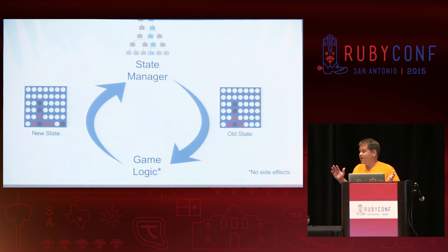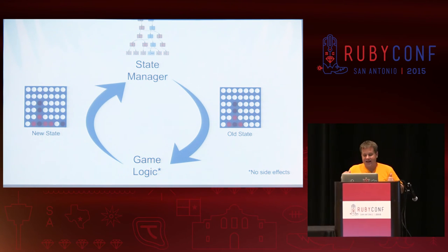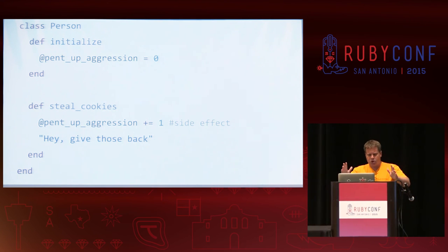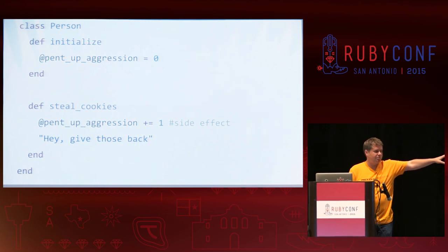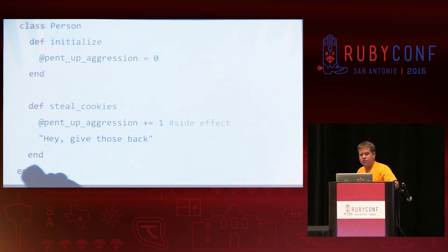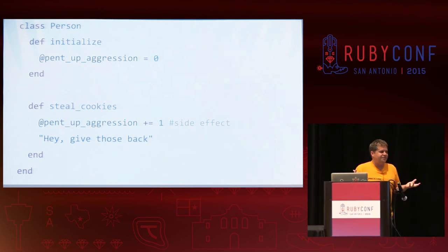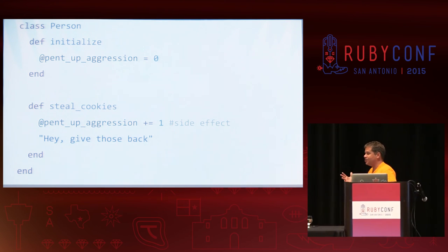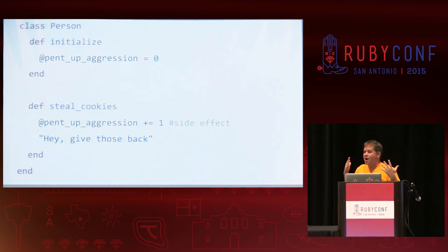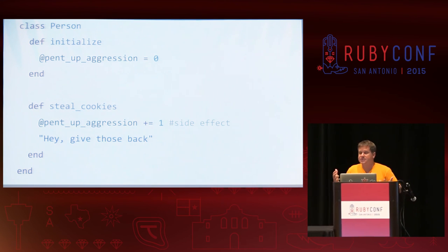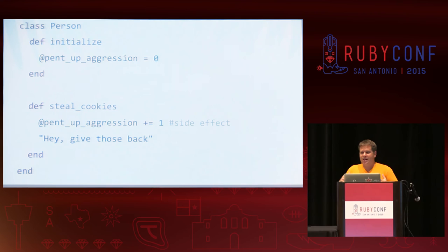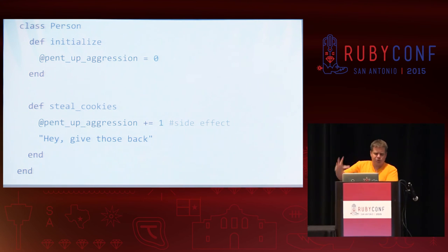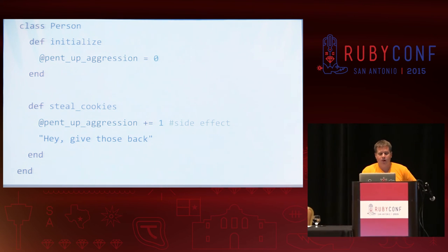There is a caveat to make this work: my game logic cannot have a side effect — it has to be made of pure functions. A side effect is something like this Ruby class with a steal cookies method that increments pent-up aggression. If I have a bunch of objects around and I'm changing instance variables, those are not reflected in the state manager. When I go to rewind, they won't be rewound. There's no way to rewind if I have random mutations in state variables in different places. So I have to write my game logic in a functional style — data in, data out. I pass arguments into a function, I operate on that, I get the answer back, and send it all the way back up to my state manager. That allows me to time travel.